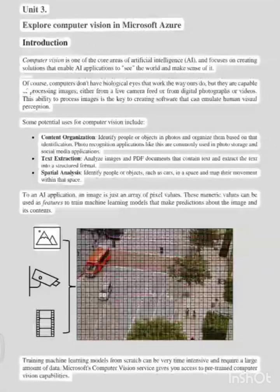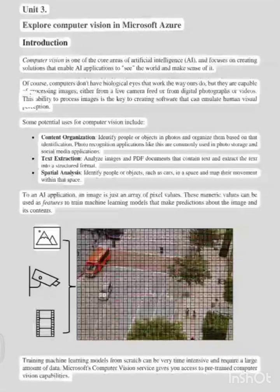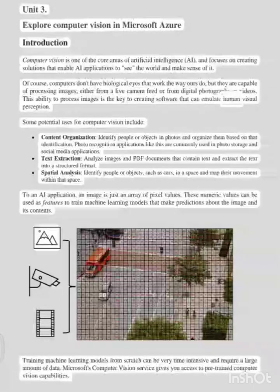Of course, computers don't have biological eyes that work the way ours do, but they are capable of processing images, either from a live camera feed or from digital photographs or videos. This ability to process images is the key to creating software that can emulate human visual perception.